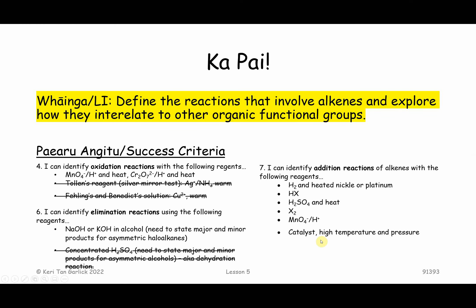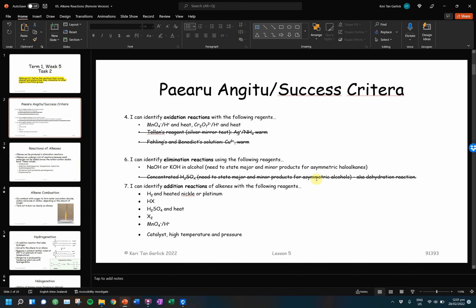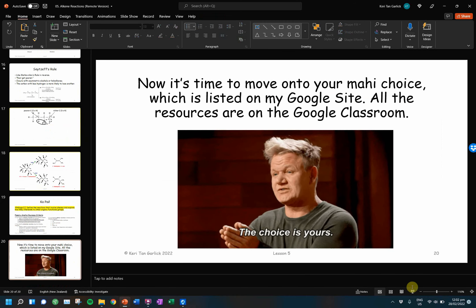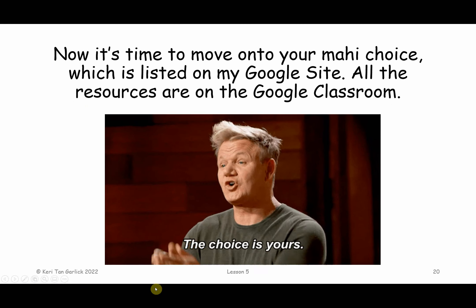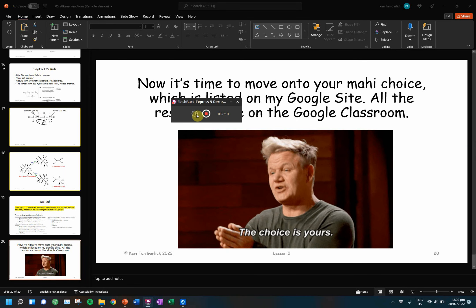That's the end of today's lesson. Great work today. You should now know all the reactions with the alkenes and start thinking about how we're going to do that interconversion. For the success criteria, you should know the oxidation reactions with the alkene, the elimination reactions, and all of the addition reactions — including dehydration. You can move on to your Mahi choice, which is listed on my Google site. All the resources are on Google Classroom.